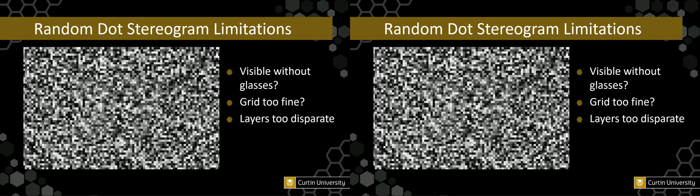There are some limitations of random dot stereograms. Sometimes, if the stereogram hasn't been constructed correctly, you can actually see the number without the glasses on. Also, the grid might be too fine — if someone has degraded vision or poor acuity in one or both eyes, they might not see the grid. So there's some optimisation needed in terms of grid density. But if the grid is too coarse, you can't easily see a number in it. If the layers are too far separated, people might also have trouble viewing it.